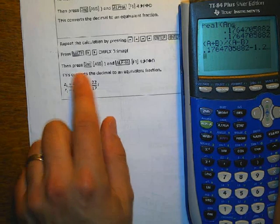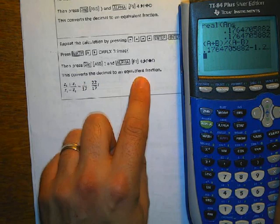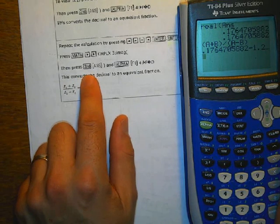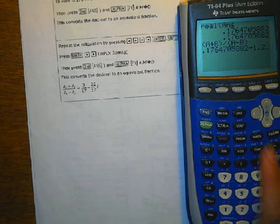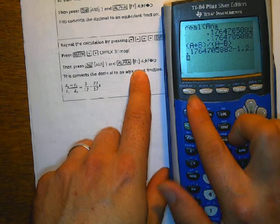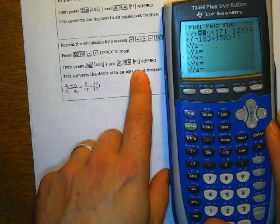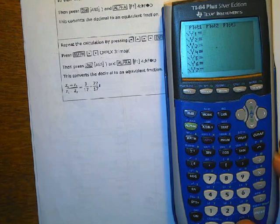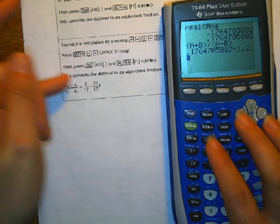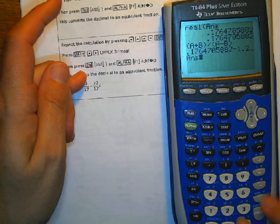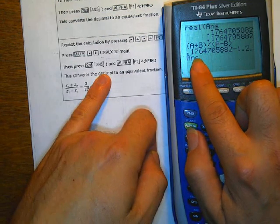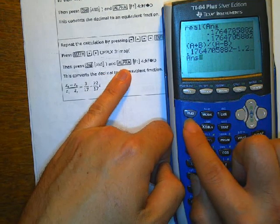So at this point, if I want to see this as a fraction, because it doesn't have to look like the ugly decimal, I can press alpha, F1. It doesn't make any sense. Okay. Let's. Okay. Second answer. Okay. So this takes that answer. So second ANS takes this answer, and now I'm going to press alpha, F1.